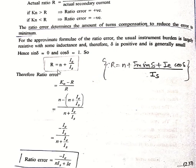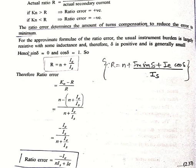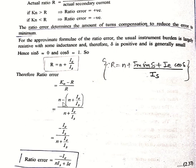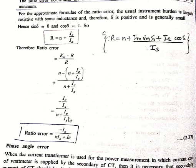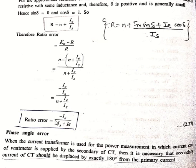If K_n is greater than R the ratio error is positive; if K_n is less than R the ratio error is negative. The ratio error determines the amount of turn compensation needed to reduce the error to minimum. For the approximate formula of ratio error, the usual instrument burden is largely resistive with some inductance, so delta is positive but generally very small. Since sin(delta) equals 0 and cos(delta) equals 1, putting these in the transformation ratio gives R equals N plus I_E divided by I_s. Therefore the ratio error becomes: minus I_E divided by (N*I_s + I_E).